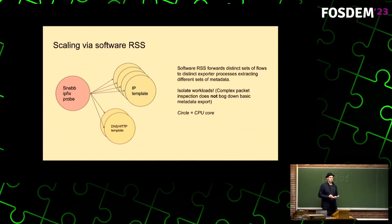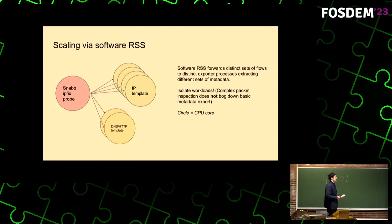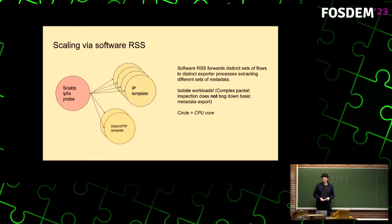We might, for example, care more about having an accurate general IP flow profile to send to the collectors. And if we still have some time left, we will also do some DNS analysis. But we don't want one to slow down the other.